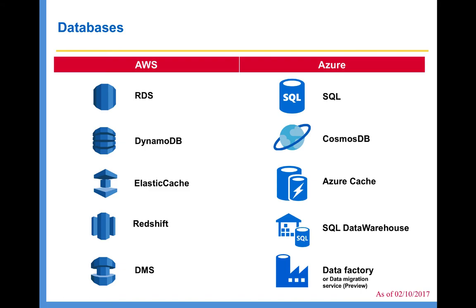In terms of databases, if you want to deploy a relational database on the cloud, then you can use AWS RDS, which stands for Relational Database Service. Using AWS RDS, you can deploy MySQL, Oracle, and other databases. AWS also has their own database called Aurora, which I'm going to talk about in the detailed lectures.